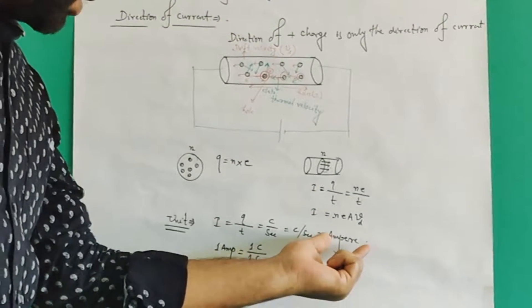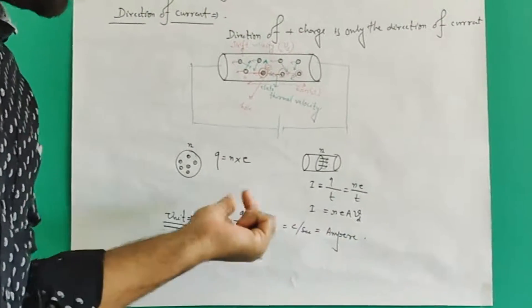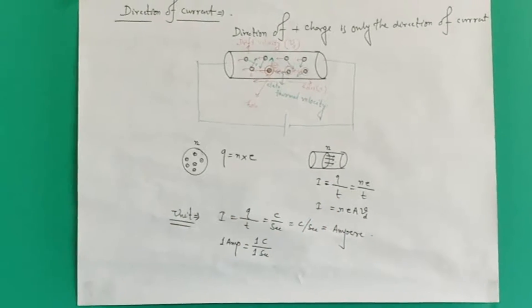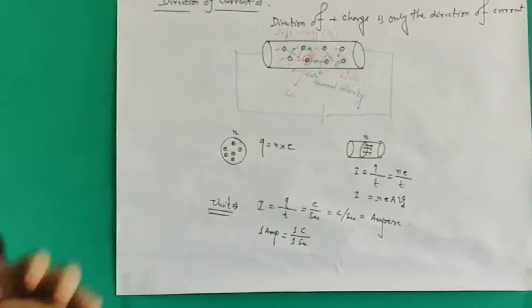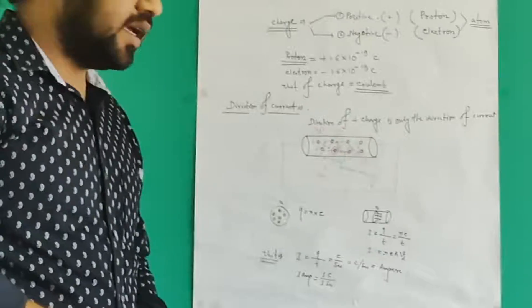Ampere is named after French scientist Andre-Marie Ampere. For this French scientist, we have given this unit of current as ampere.